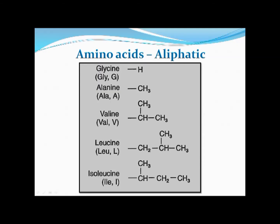In books or any material, amino acids are written not just by full name but also in a 3-letter code or a 1-letter code. For example, glycine has the 3-letter code Gly and the 1-letter code G.